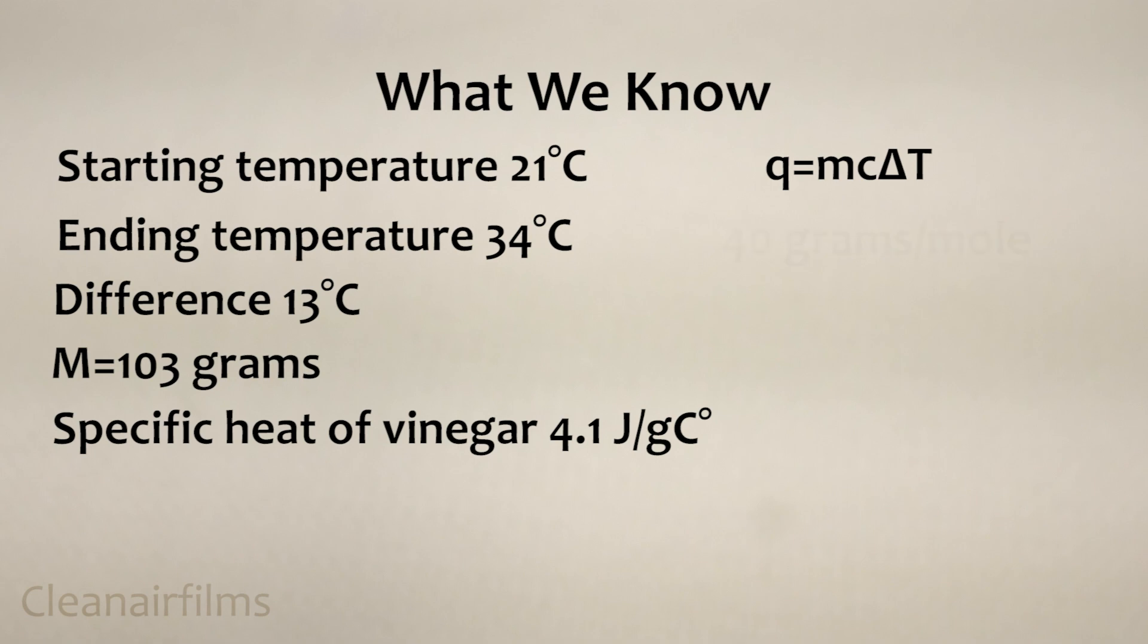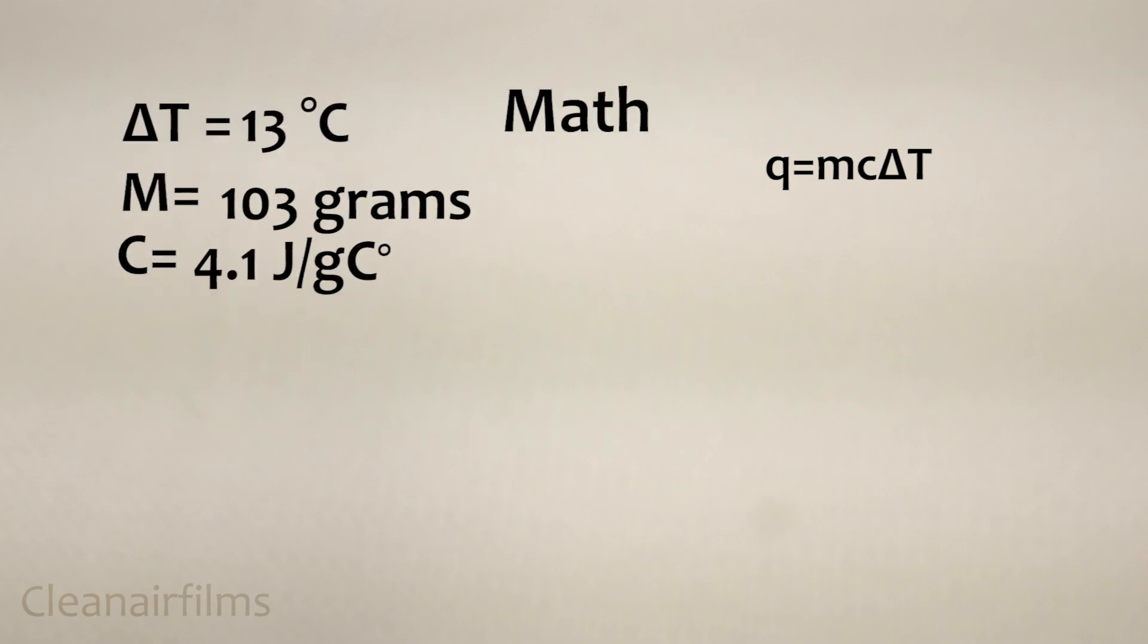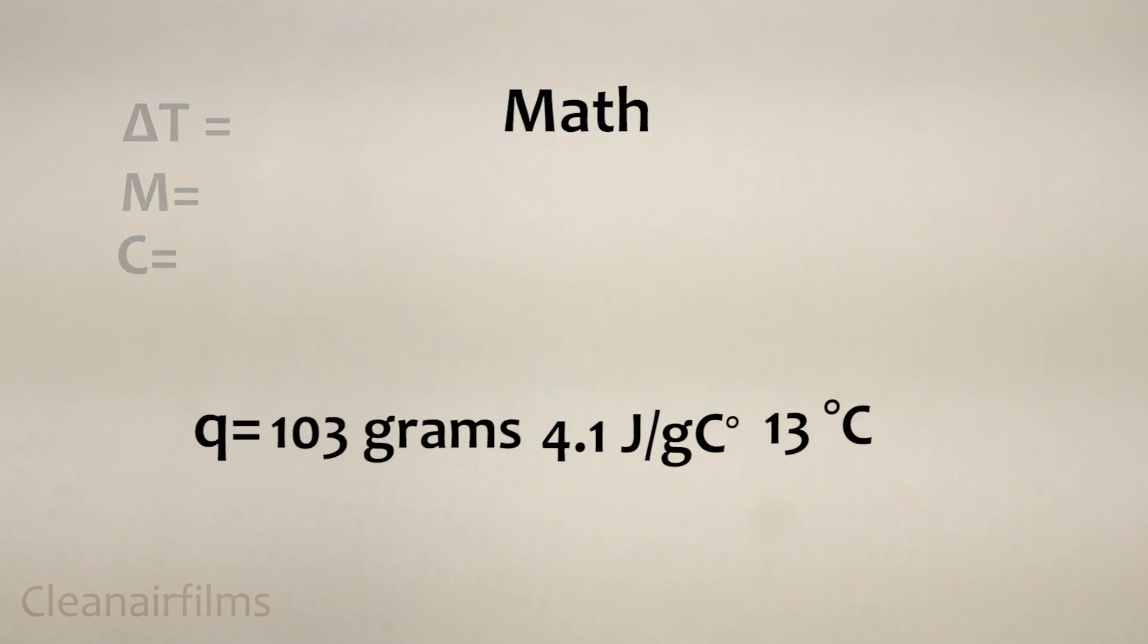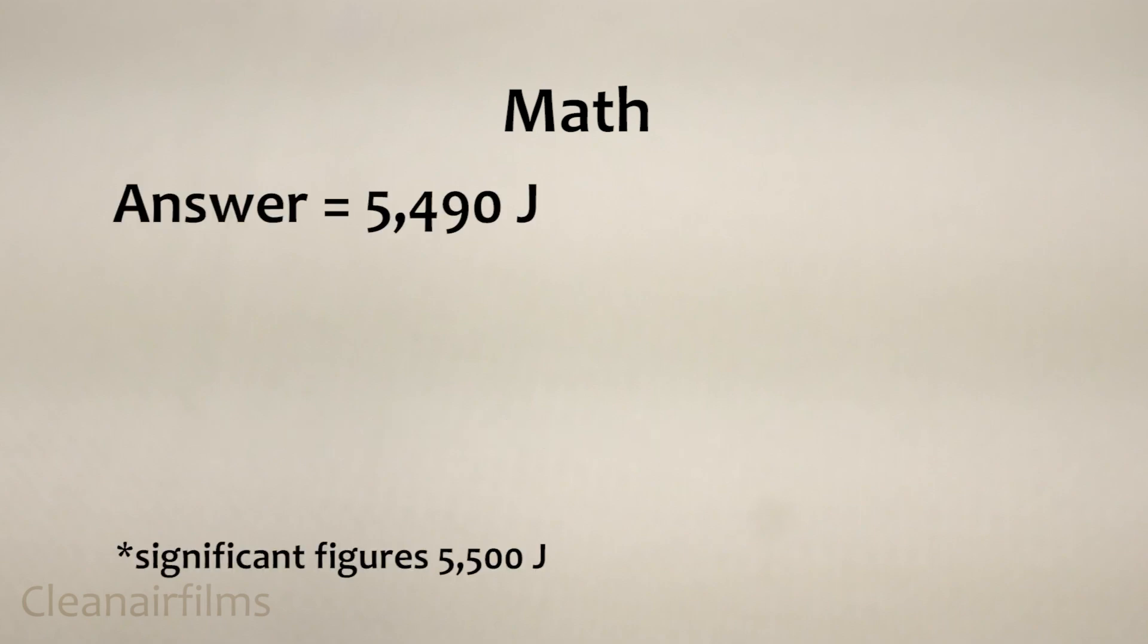We also have the atomic mass of lye which is 40 grams per mole. Now let's do the math. Place these numbers into the equation and multiply them together. After multiplying and cancelling the units we get 5,490 joules.